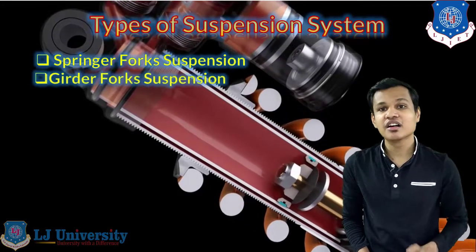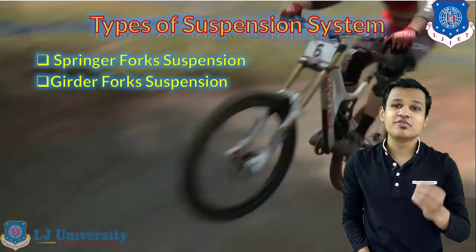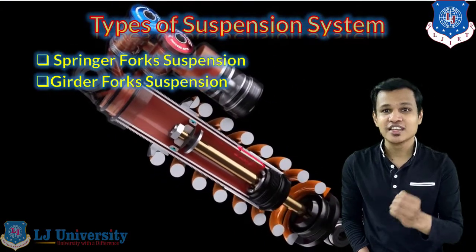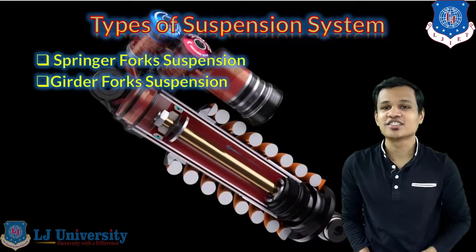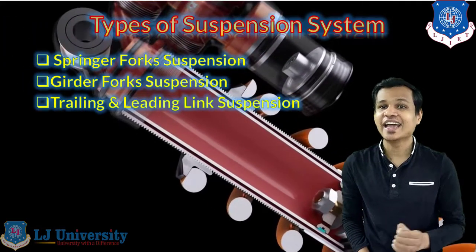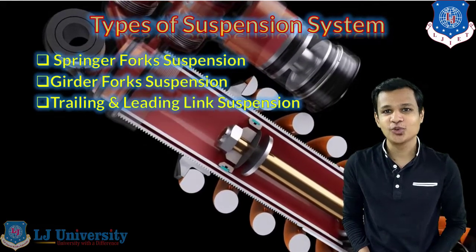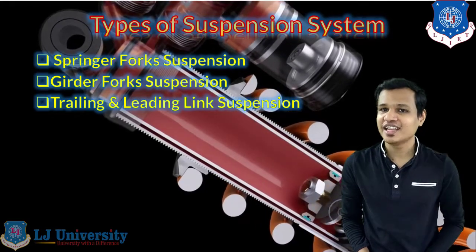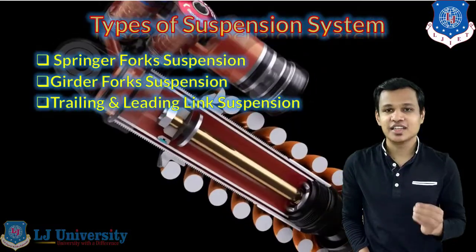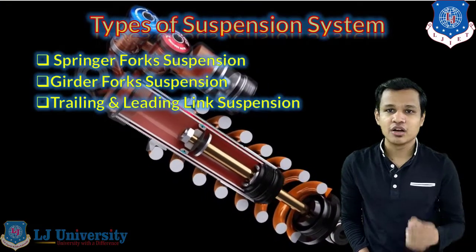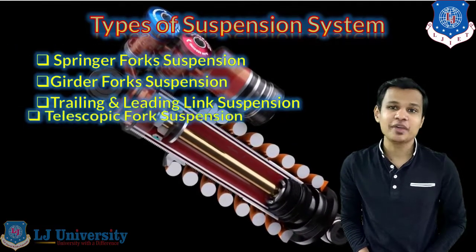The second type is the girder fork suspension system, which can be called the second generation suspension system. It was used in two wheelers and removes some disadvantages of the first generation type. The next type is the trailing and leading link suspension, which we also saw in the context of four wheelers. In two wheelers, activas up to the BS4 model were using the trailing link suspension.